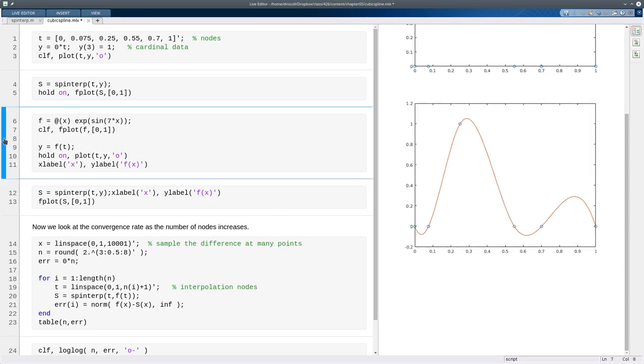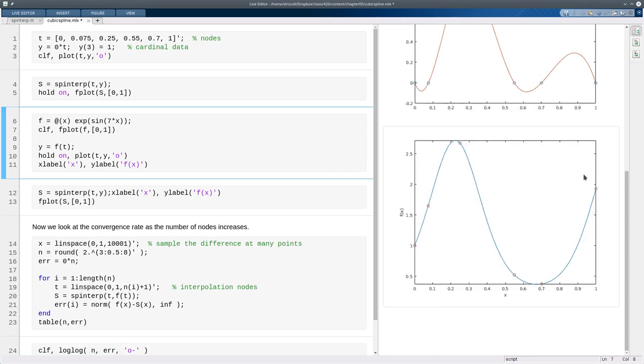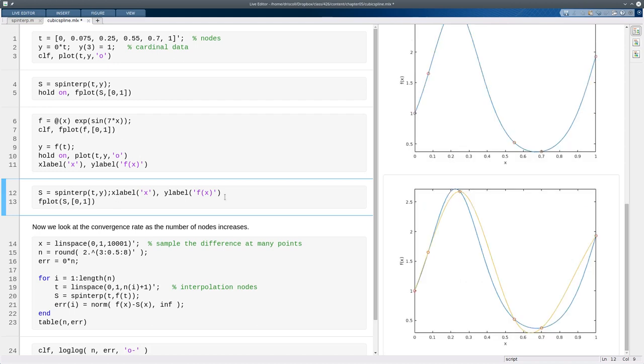For the same set of nodes, here's a function to interpolate. A nice smooth function, and the points show the data values. And then based on that, we can compute the spline interpolant and plot that. So of course it has to interpolate at the nodes. It's not terribly great in between, but this is a small number of nodes.